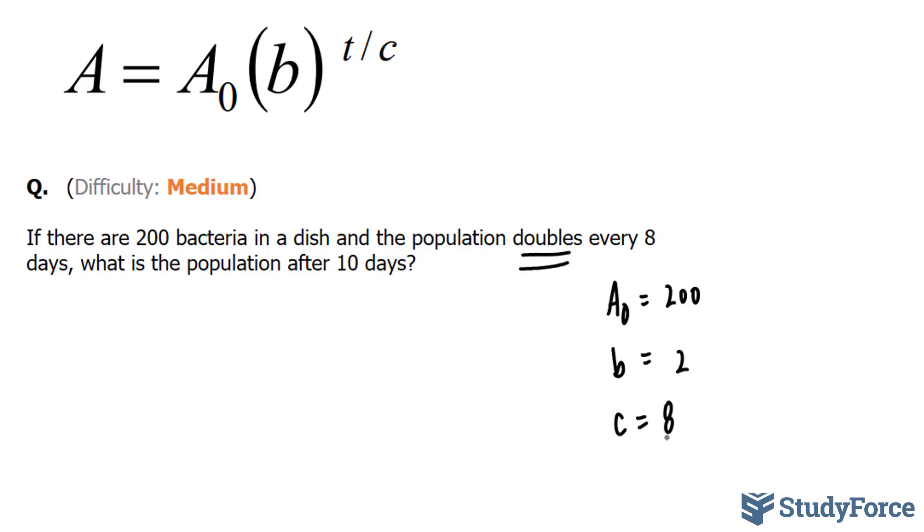Now all we do is plug in these values. A, which represents our final population, let's write that down. A is equal to our final population.